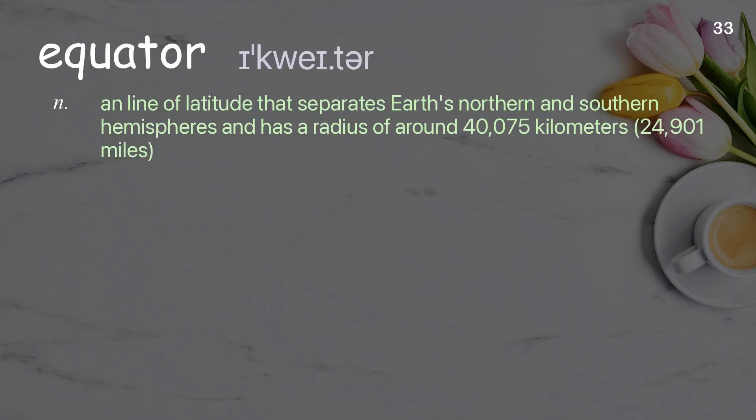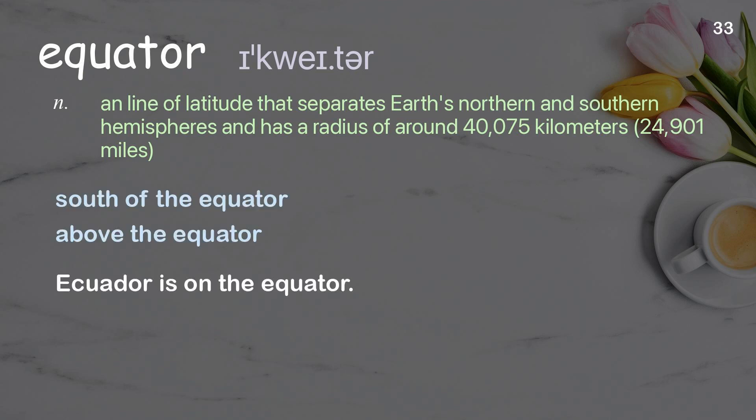Equator: A line of latitude that separates Earth's northern and southern hemispheres and has a radius of around 40,075 kilometers, or 24,901 miles. Examples: South of the equator. Above the equator. Ecuador is on the equator.